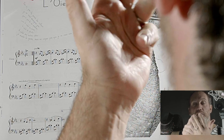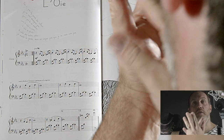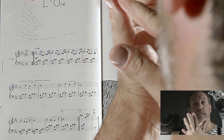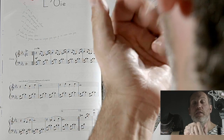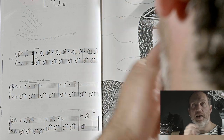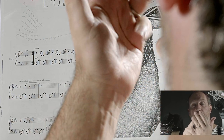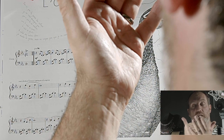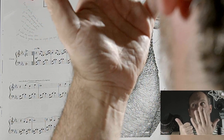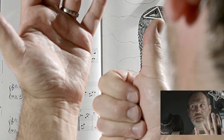Do, Ré, Mi, Fa — Do-Fa égale une quarte. Si je pars d'un La, par exemple — La, Si, Do, Ré, Mi, Fa — de La à Fa, j'ai une sixte. Donc : seconde, tierce, quarte, quinte, sixte, septième, octave, et ensuite neuvième, dixième, onzième, treizième, etc.